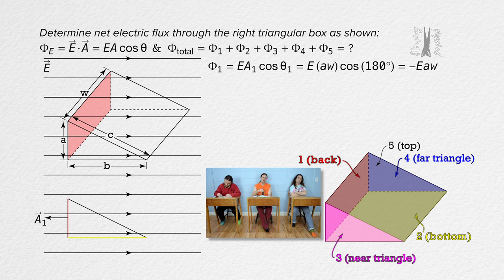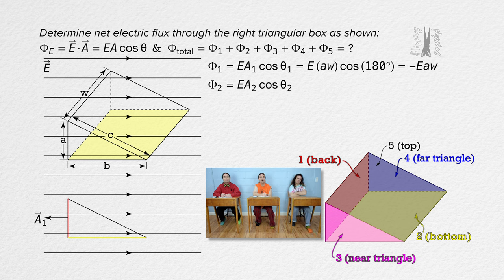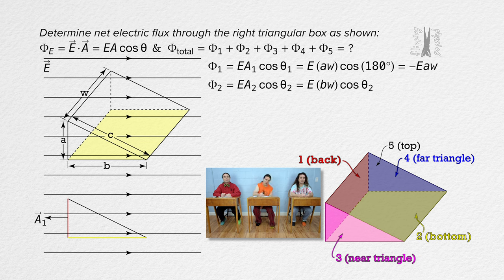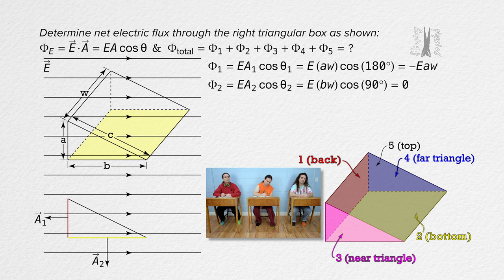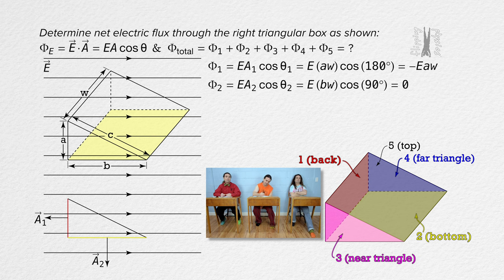Bo, how about the electric flux through area 2, the bottom? Using the same equation with subscripts of 2, area 2 equals B times W. The direction of area 2 is always out of the closed surface, so area 2 is directed down. That makes the angle between area vector 2 — which is down — and the electric field vector — which is to the right — 90 degrees, and the cosine of 90 degrees is 0. There is zero flux through the bottom of the right triangular box. The electric field lines are parallel to the bottom surface, so none of the electric field lines go through the bottom surface.